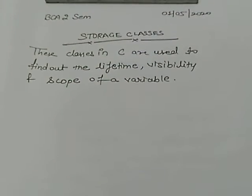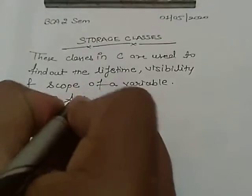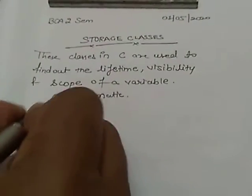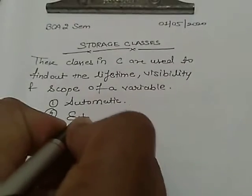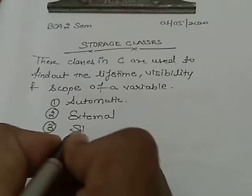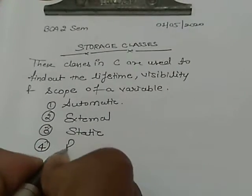There are four types of storage classes. Number one, automatic. Number two, external. Number three, static. Number four, register.